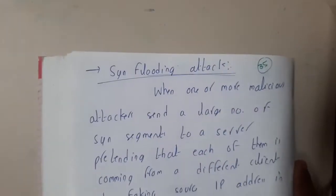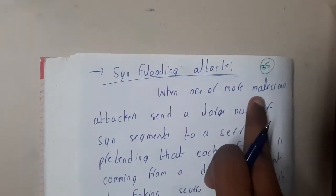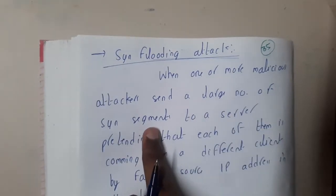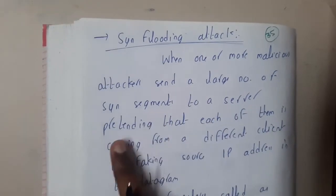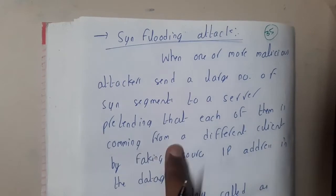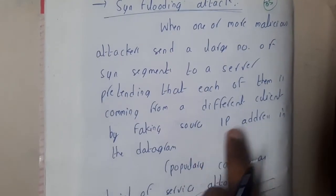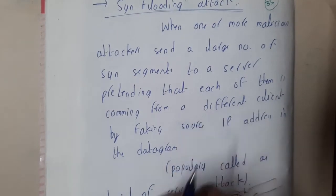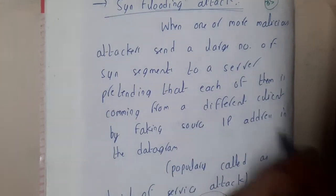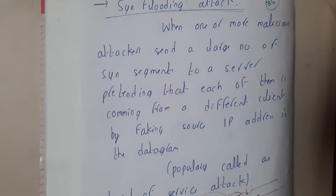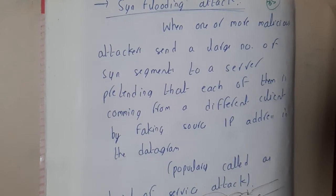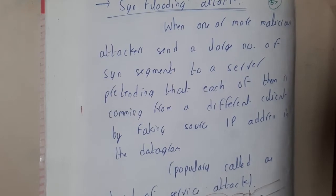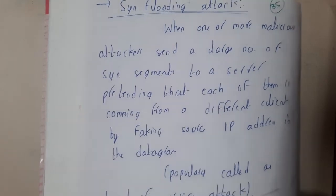In a SYN flood attack, one or more malicious attackers send a large number of SYN segments to a server, pretending each one is coming from a different client by faking the source IP address in the datagram. This congests the server, causing multiple problems — the server will not respond to legitimate users and keeps processing the same fake data repeatedly.